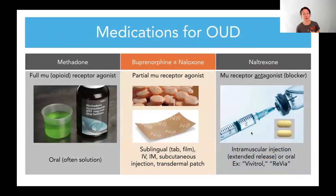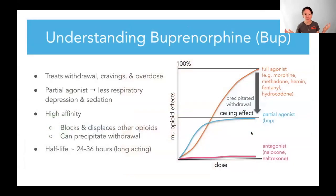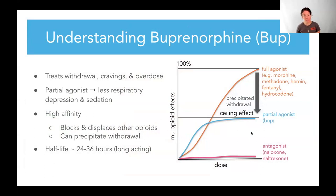There are a lot of medications we can use. We are going to talk a lot more about methadone and buprenorphine than naltrexone in this particular setting. The evidence for methadone and buprenorphine is really strong in patients who have opioid use disorder, less so with naltrexone. Buprenorphine is a partial opioid receptor agonist, which is a little newer for some people.